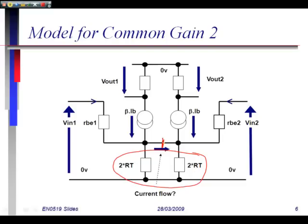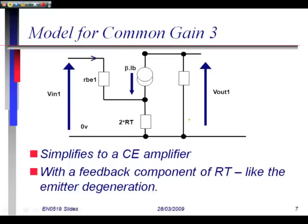We have our base currents and collector currents all feeding in at one node. We can split it down the middle and put two resistors in parallel, two times RT. The question is, what current is flowing between the two circuits? Is there any? It would be exactly the same current on both sides. Is there any current flow in the centre? The answer is no.